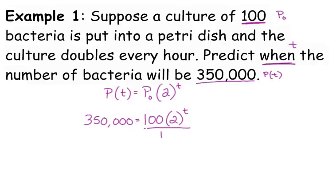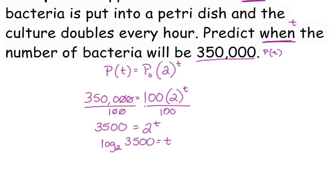To solve, we need to divide by that coefficient of 100. When you divide by 100, you're just canceling zeros, so that reduces to 3500 equals 2 to the t. We can't write 3500 as a power of 2, so we need to write this in logarithmic form. The base of the exponential is the same as the base of the logarithm, and the other two pieces switch places. So that's log base 2 of 3500 equals t.